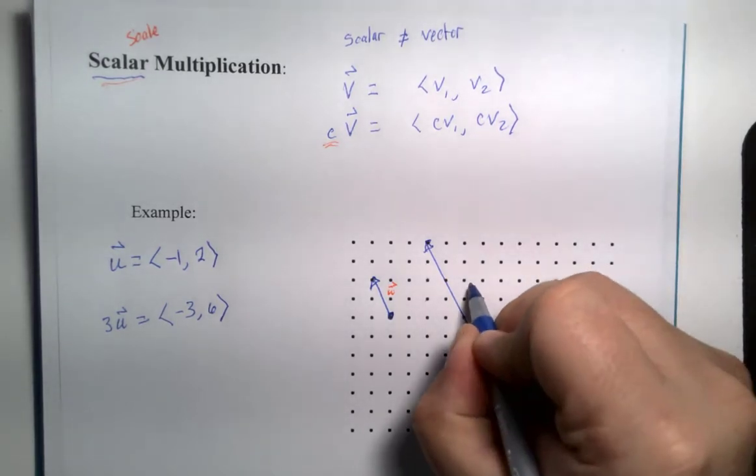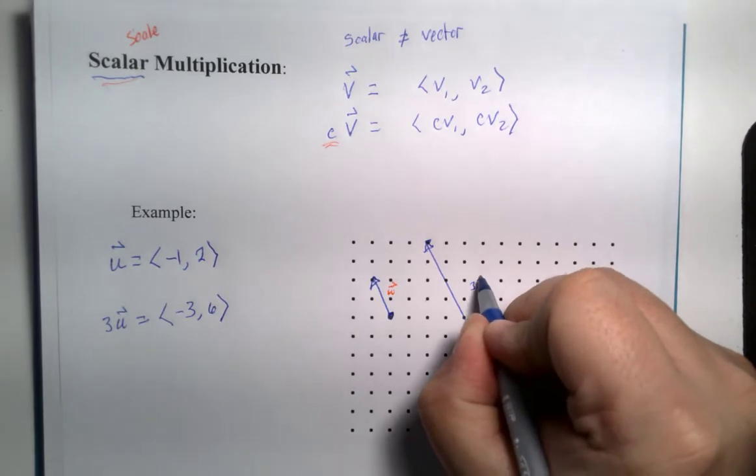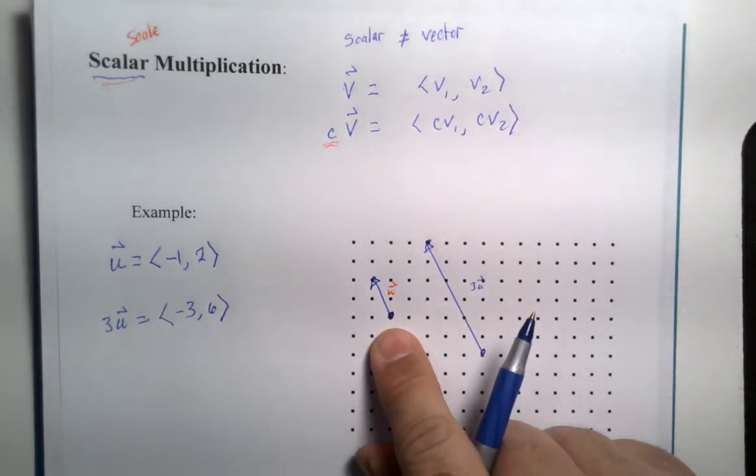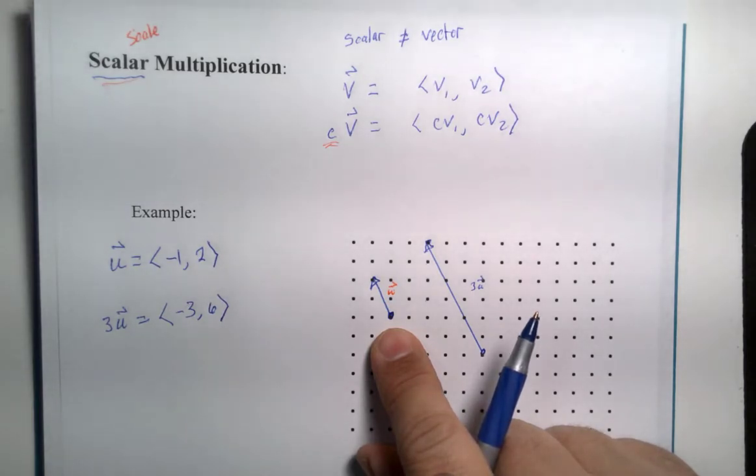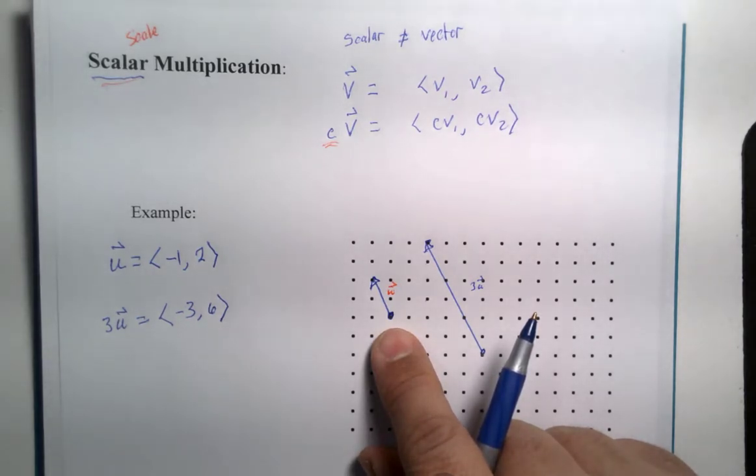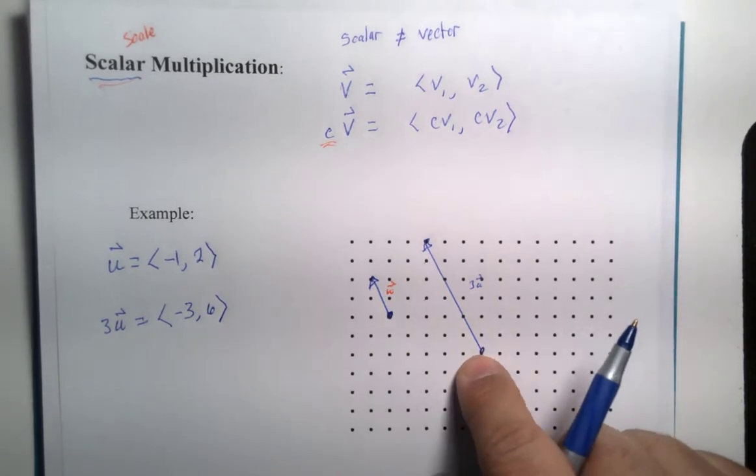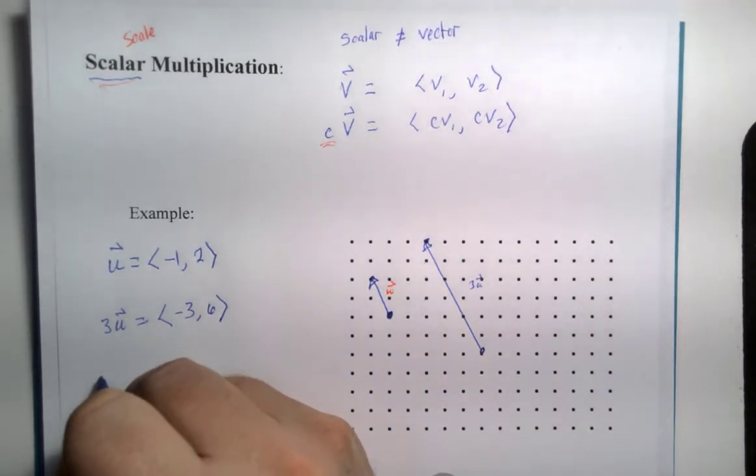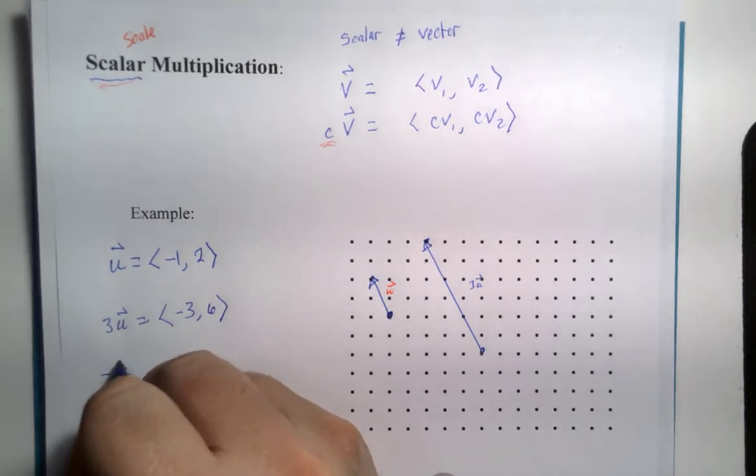Please note that vector is in the same exact direction as this one. In an algebra class, we might use the term parallel. We will use the word parallel here also sometimes. So the direction is the same. But this one is definitely longer than that one.